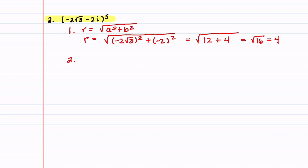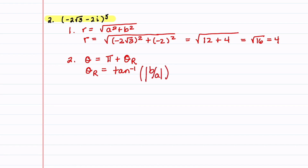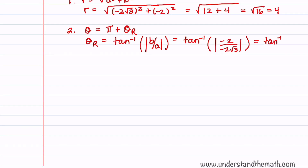Our second step is to find theta. We notice that our complex number is in the third quadrant, so theta equals pi plus our reference angle theta sub r. Theta sub r is the inverse tan of the absolute value of negative 2 divided by negative 2 root 3, which equals the inverse tan of 1 divided by root 3, giving us pi over 6. So theta equals pi plus pi over 6, which is 7 pi over 6.